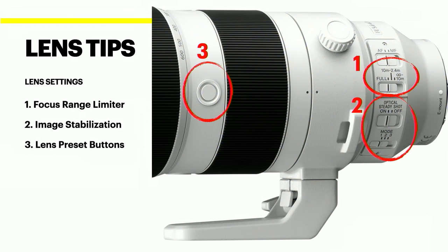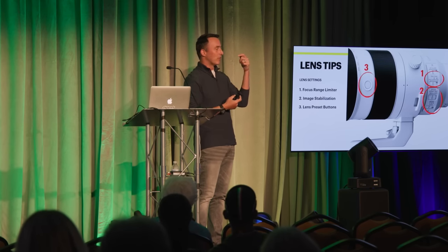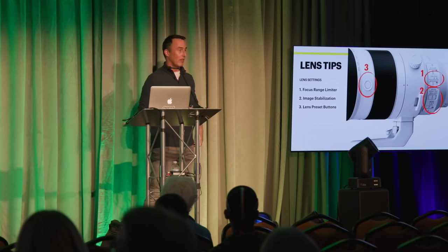A couple of lens tips: focus range limiter — if you have a bird feeder close but the camera keeps picking up something in the distance, set the limiter to only look close, and vice versa. Image stabilization — lots of controversy; look it up in your lens manual, as every lens is different. For my lenses I keep it on regardless of shutter speed, but I've verified that. And use those little lens preset buttons — you can turn auto ISO on and off, switch between focus modes, switch between different modes. Your hands are already out there, so they can be really useful.